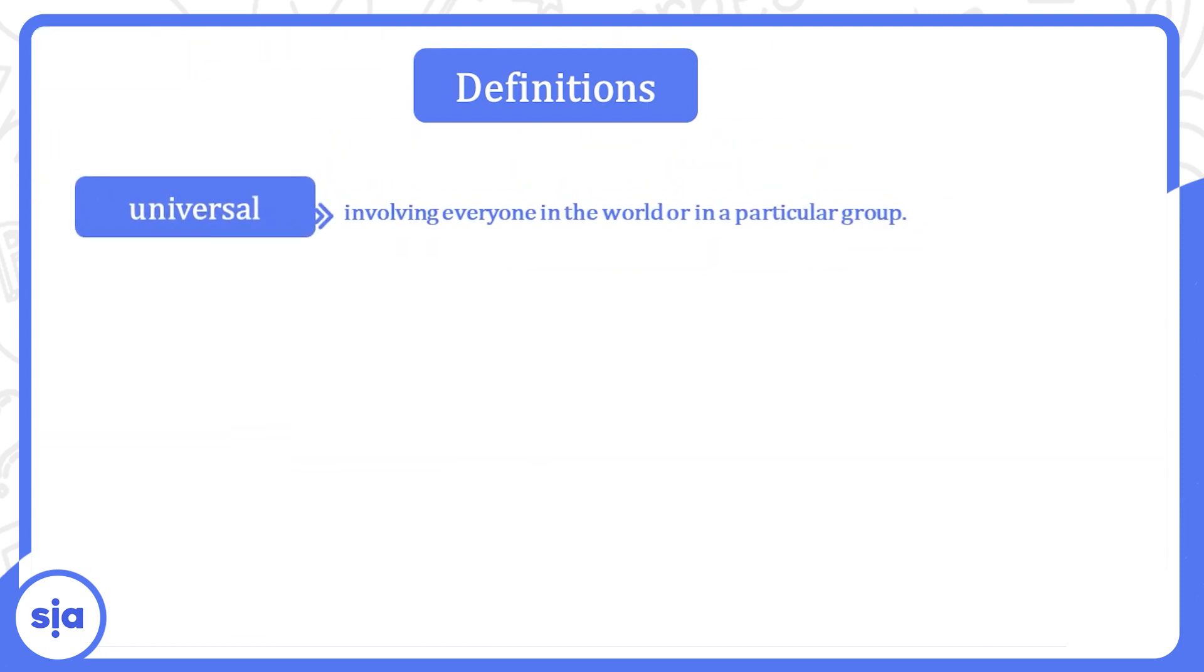Universal. Involving everyone in the world or in a particular group. Universal معناها شامل حاجة شاملة. His fine character earned him universal respect among his group. شخصيته الجميلة خلته إن هو يحظى باحترام كل الناس في الgroup.